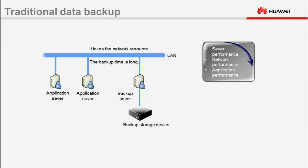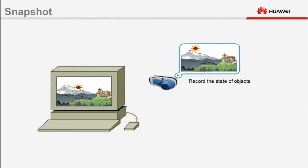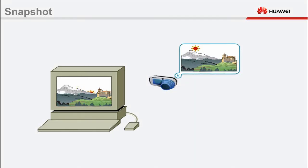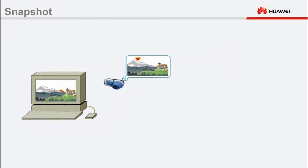To address these pain points, a variety of data backup and protection technologies, including snapshot technology, have emerged. Snapshot is a data backup technology that records the state of objects within the system at a specific point in time, much like a photo captures a moment in time.